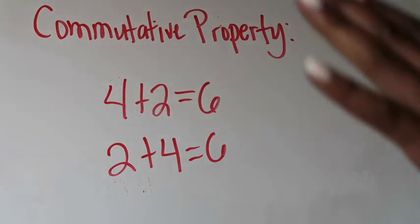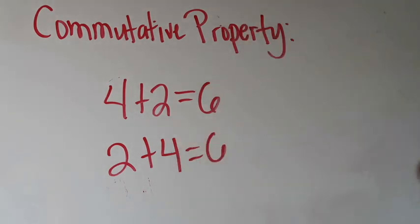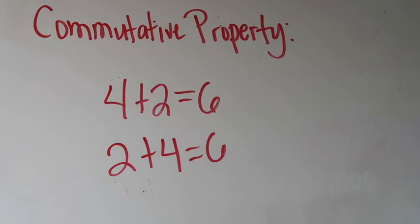So the commutative property is all about the order. No matter what order you put those addends in, your sum is always going to be the same as long as you don't change your addends.